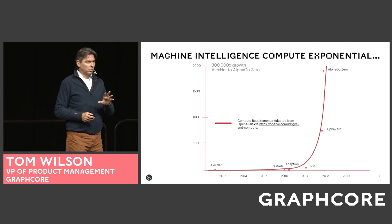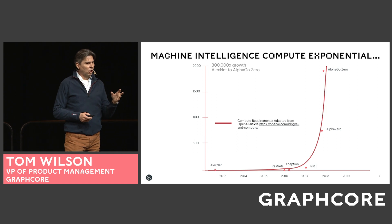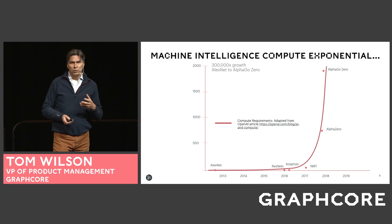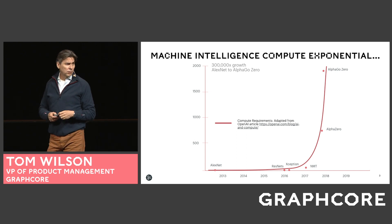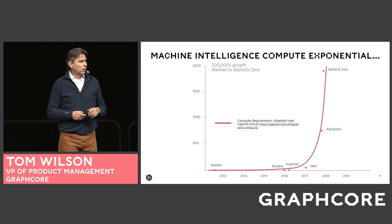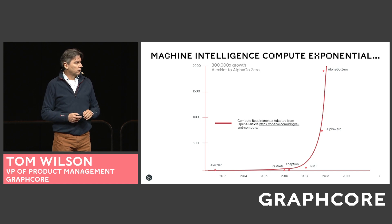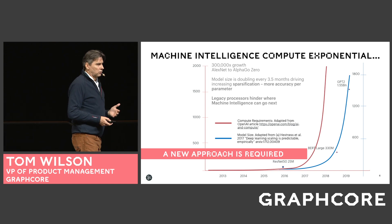You've already seen something like this in the last talk, and it's on everybody's mind: this exponential growth in compute requirements. This is derived from that OpenAI article where they were talking about a 300,000 times growth in compute requirements from the times of AlexNet to where we are with AlphaGo Zero. And of course that really comes about because of the increasing model size.